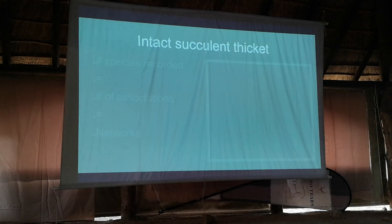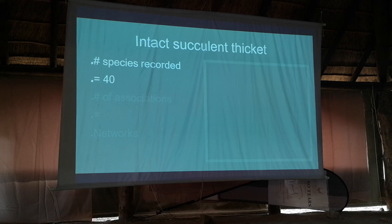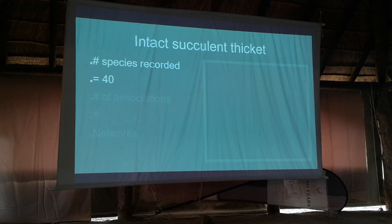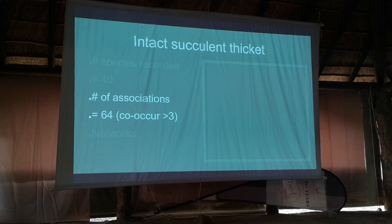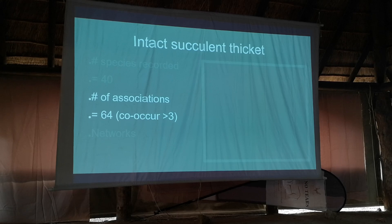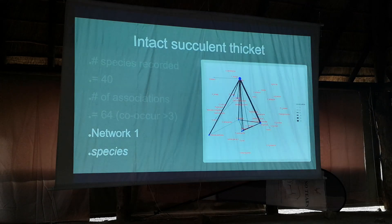In intact succulent thicket I found 40 species across the 30 plots - quite a high number considering the plots are basically the size of a piece of paper. There were 64 pairs that co-occurred in more than three of the plots; I filtered out anything that only occurred once or twice. I wanted to see which associations were quite frequent, and also to make the network more visually palatable.